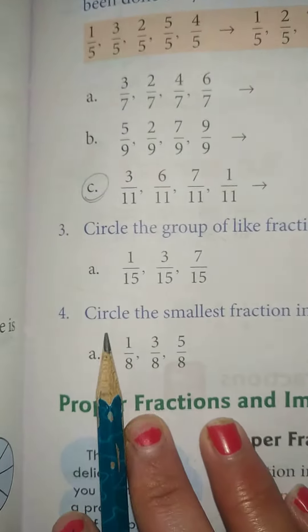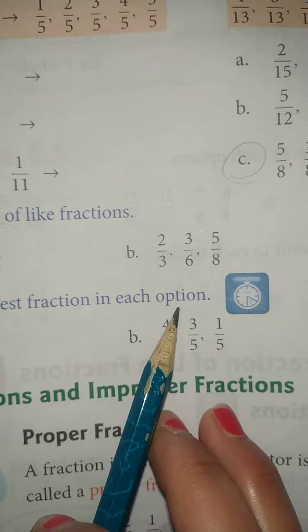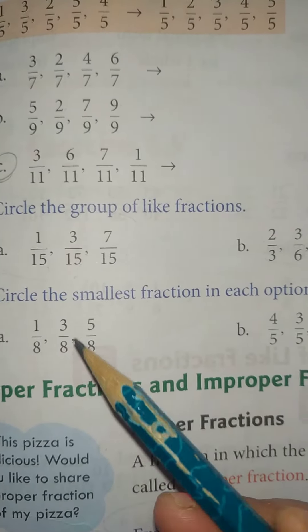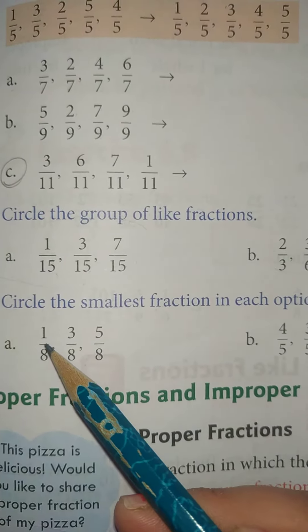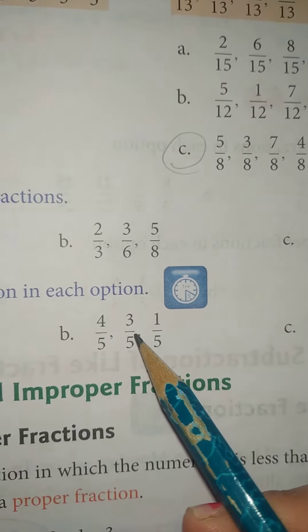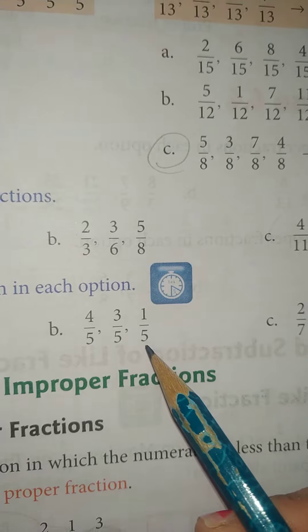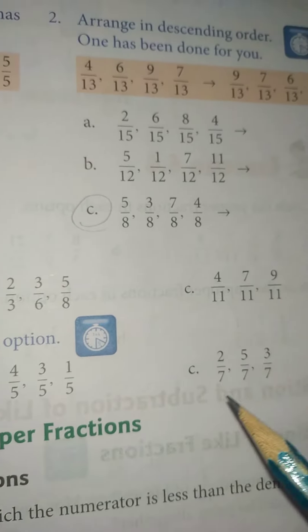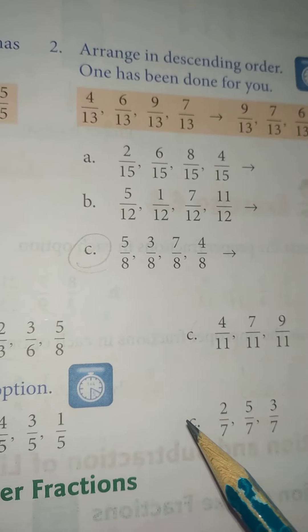Now in question number 4, circle the smallest fraction in each option. Yhaa pe aapko sab se chhota fraction ko circle karna hai. Toh sab se chhota yhaa par khaunsa hai? 1 by 8. Aur yhaa pa sab se chhota hai? 1 by 5. So in the same way you have to do the other questions yourself in the copy.